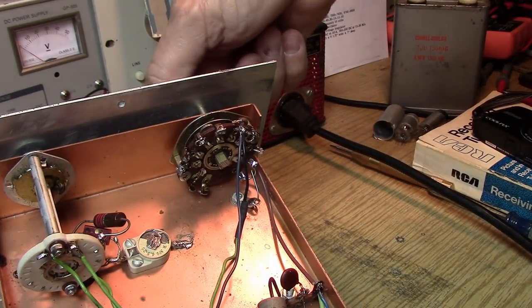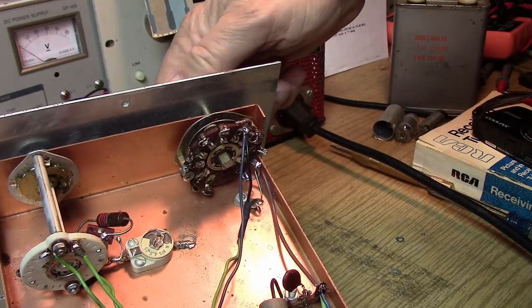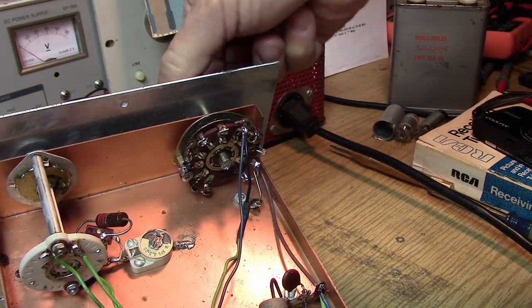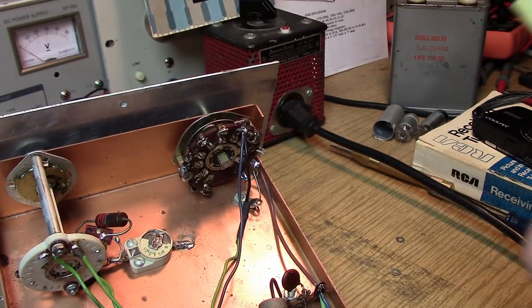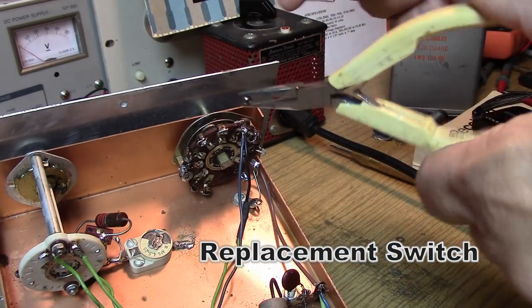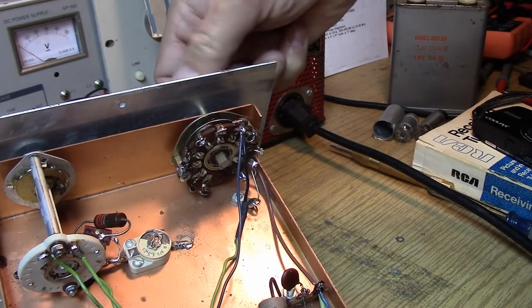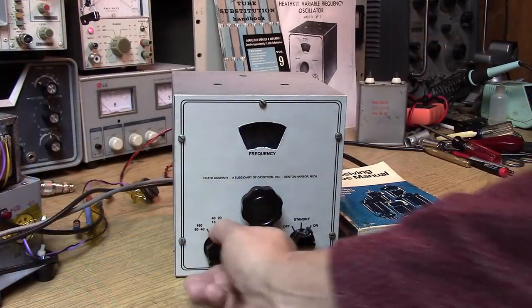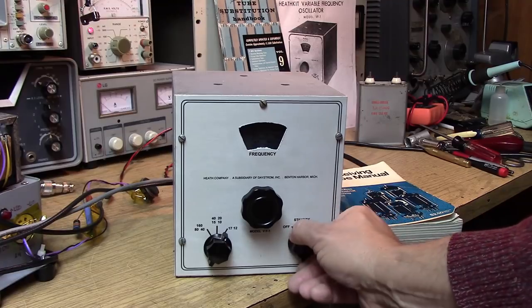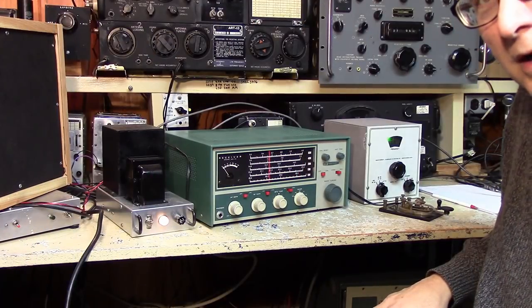I noticed that this switch was turning pretty hard compared to the other one. It's a pretty sturdy switch and it has two of these ball bearings. What I did is I put a screwdriver in there and removed one of the ball bearings and now the switch is much easier to turn.